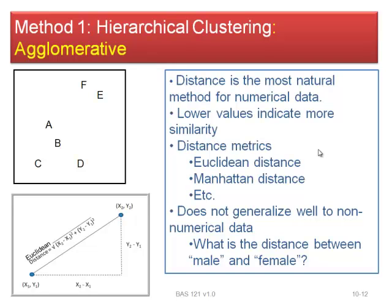Obviously if the data is not numerical — like males versus females — we can't measure distance. The lower the distance, the closer they are, indicating they're similar. Using geometry: A² + B² = C² from a right triangle. We can always form a right triangle to measure distance, and that's exactly the math we'll use. There are other mathematical approaches to measuring distance, but we'll use this simple Euclidean method.